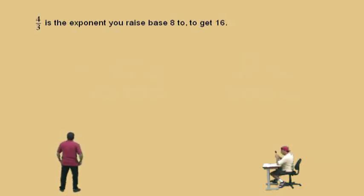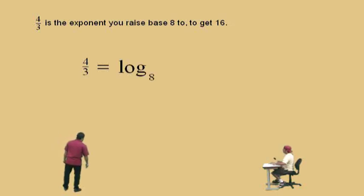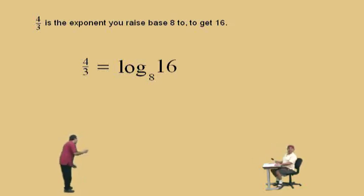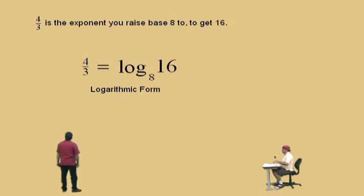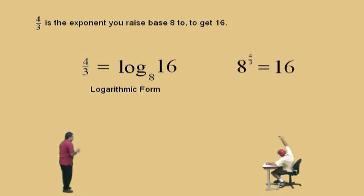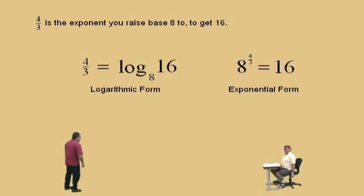Let's do another one — let's make it a tougher one. I want to turn off the graphics, so all you have to do is read and watch it translate. Make sure it's in logarithmic form. Four-thirds is the exponent you raise base eight to, to get 16 — and that's it, Charlie, that is true. Now flip it over to exponential form and go ahead and read it. Four-thirds is the exponent you raise base eight to, to get 16, and that is the exponential form. Very nice, Charlie — that magic mathematical microphone works every time.